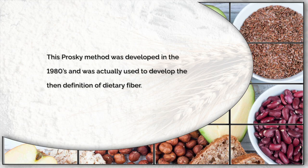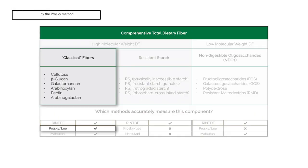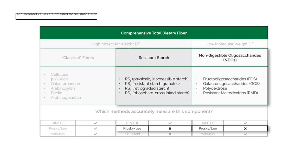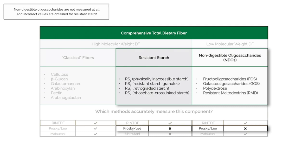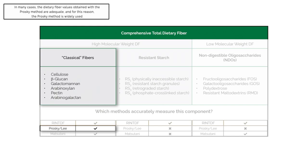The Prosky method was developed in the 1980s and was actually used to develop the then definition of dietary fibre. Since that time, the importance of resistant starch and non-digestible oligosaccharides as dietary fibre components have been recognised, and these have been incorporated into the dietary fibre definition published by Codex Alimentarius in 2009. Only high molecular weight polysaccharides, including those that are water insoluble and those that precipitate from solution in 80% ethanol, are measured by the Prosky method. Non-digestible oligosaccharides are not measured at all and incorrect values are obtained for resistant starch. In many cases, the dietary fibre values obtained with the Prosky method are adequate, and for this reason the Prosky method is widely used.